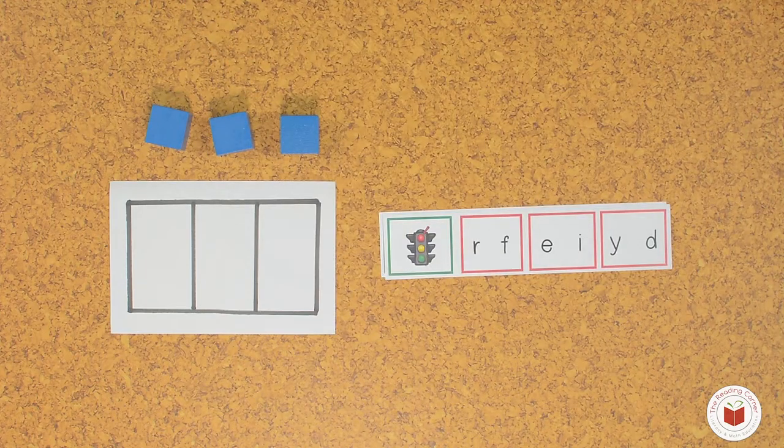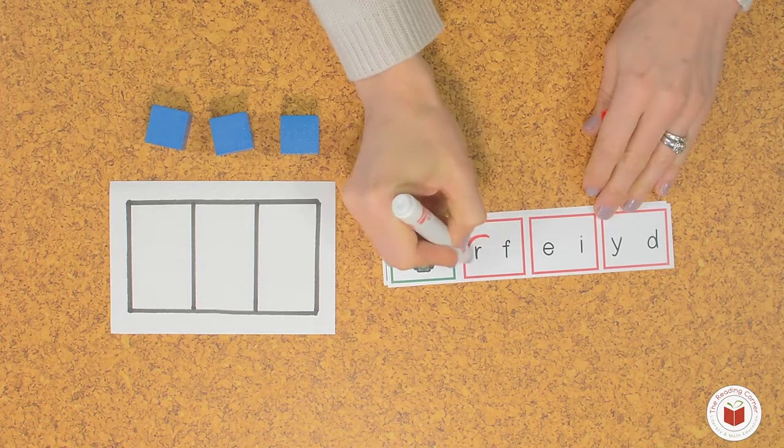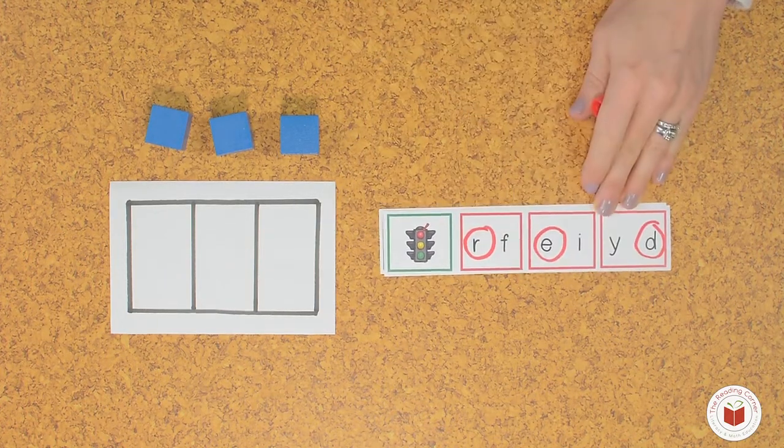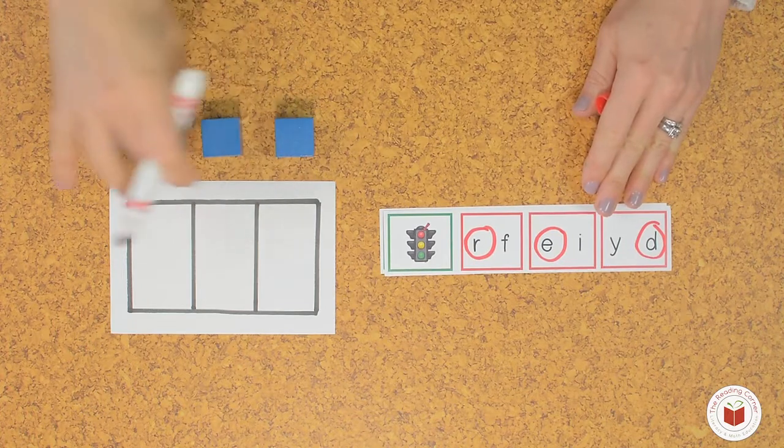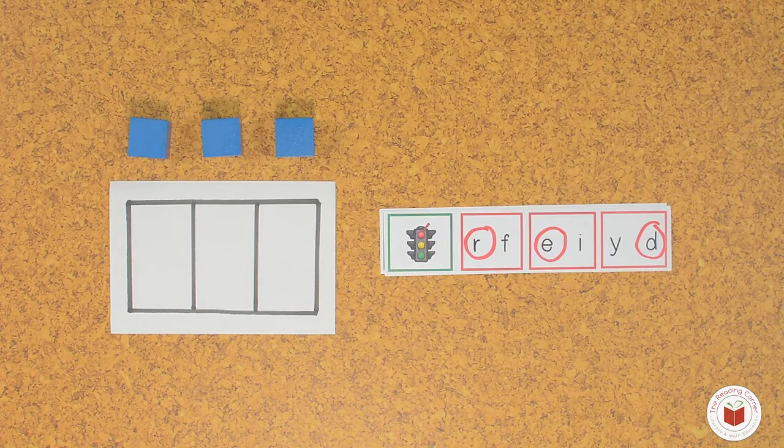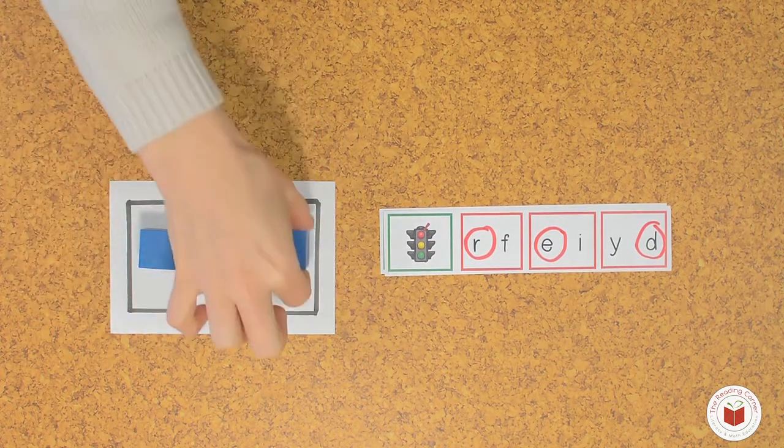Red. R-e-d. Move the squares down to represent the sounds you hear in the word red. R-e-d.